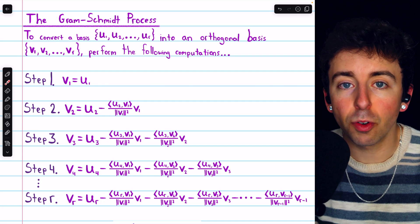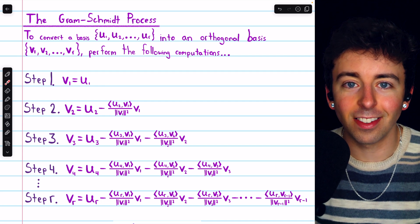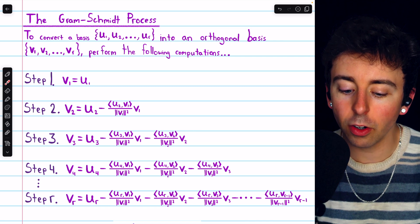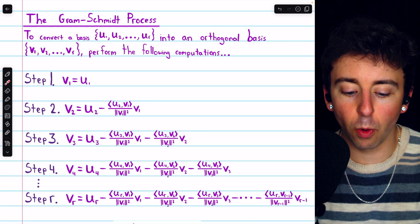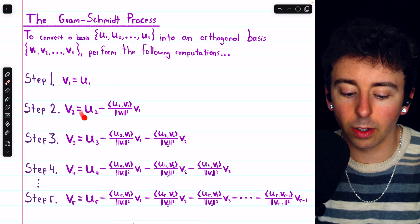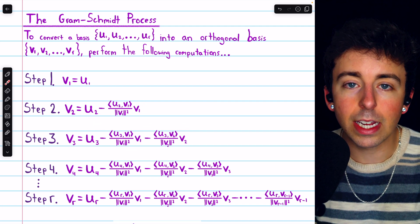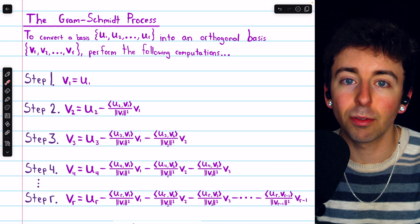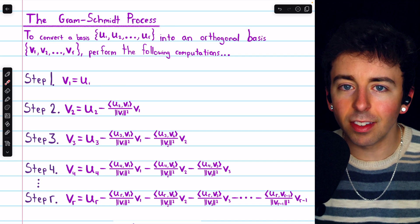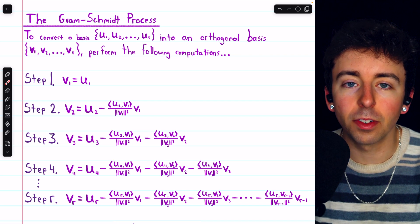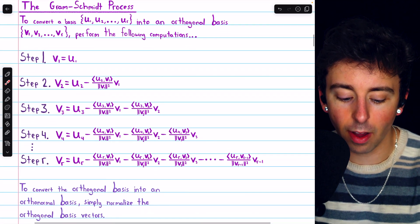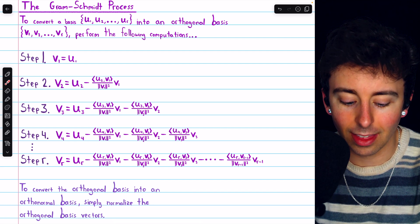That proof, in essence, was the Gram-Schmidt process, though there were some additional details since it was a proof. Here's the process condensed to the steps: to convert a basis u1 through ur into an orthogonal basis v1 through vr, we perform these computations. v1 is u1; v2 is the component of u2 that is orthogonal to v1; v3 is the component of u3 that is orthogonal to v1 and v2, or more precisely the space spanned by them; and so on. If desired, we could normalize the vectors at each step, or alternatively get the orthogonal basis and then normalize it to get the orthonormal basis.